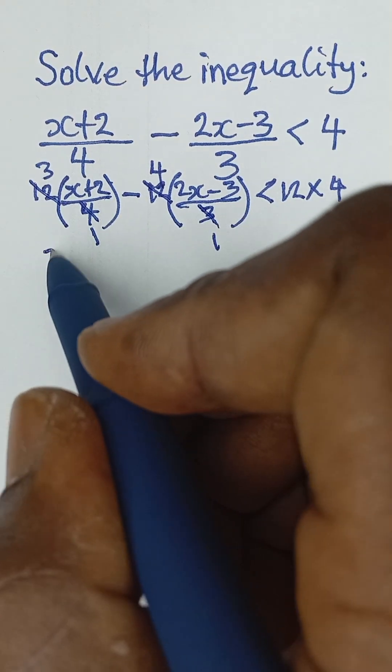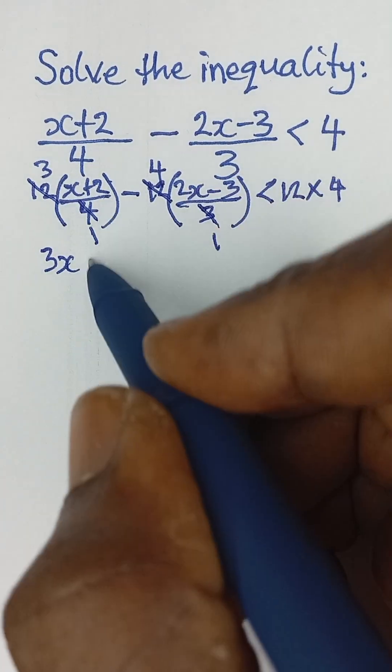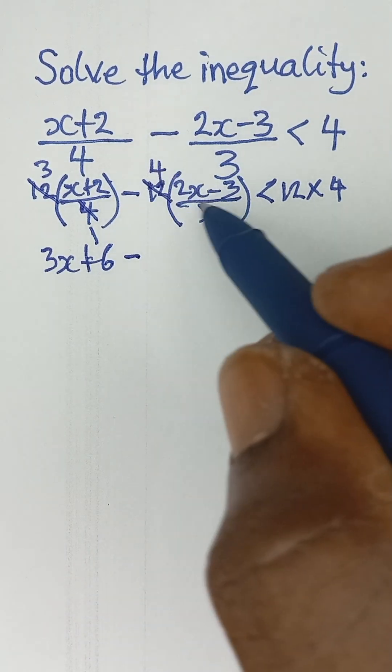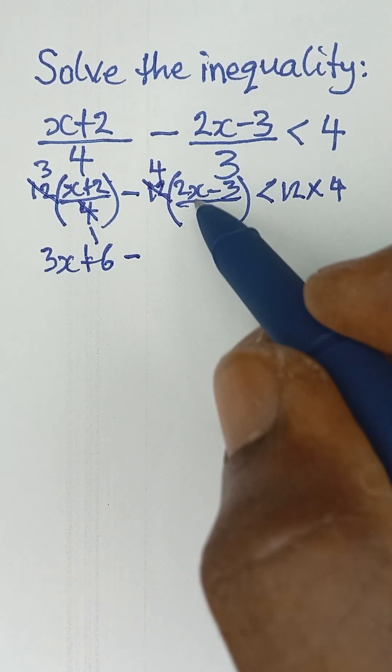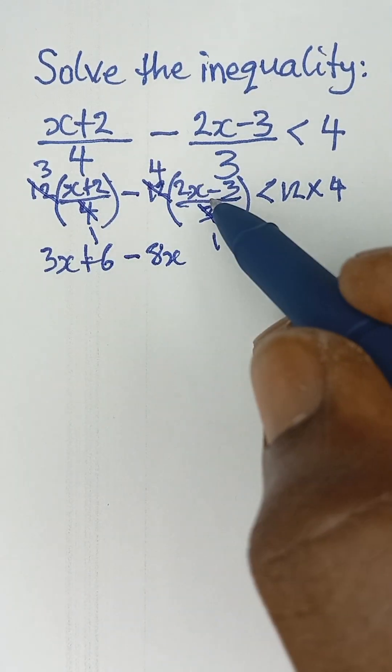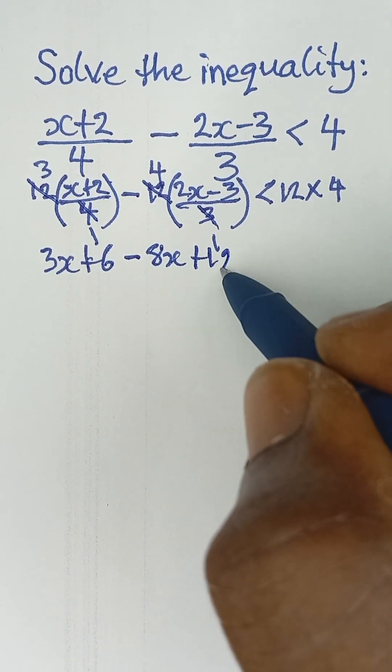So what we have left now is 3 multiplied by this. 3 multiplied by x will give us 3x. 3 multiplied by 2 will give us positive 6. And then minus: 4 multiplied by 2x will give us -8x. And then -4 multiplied by -3 will give us positive 12.